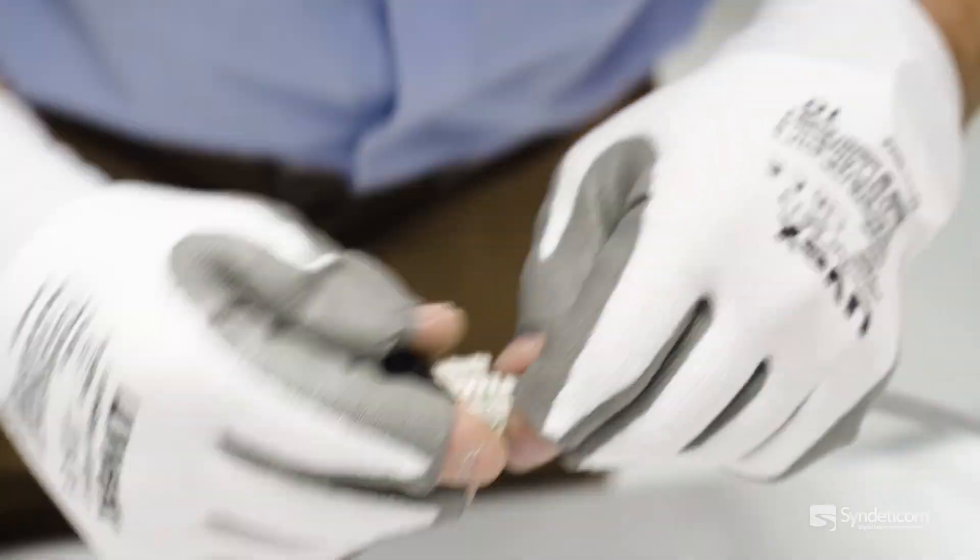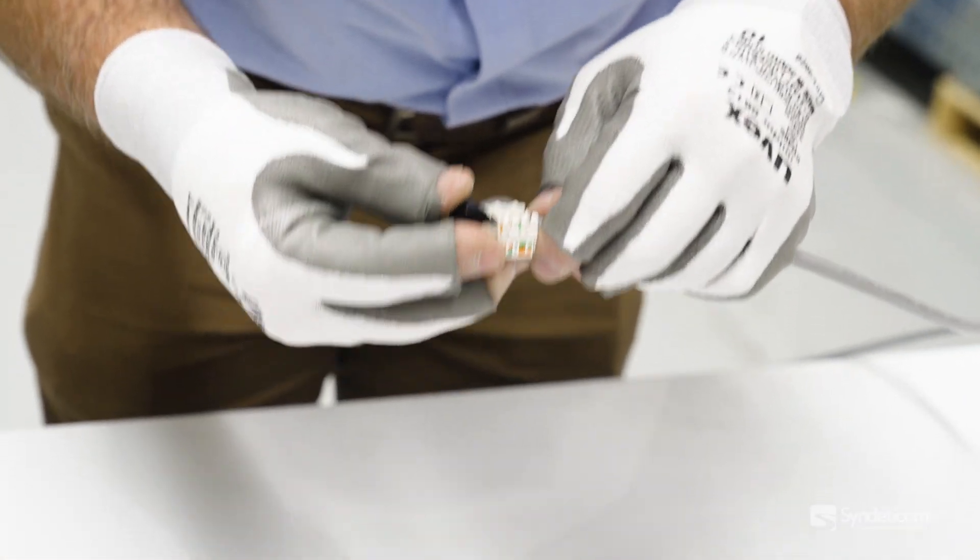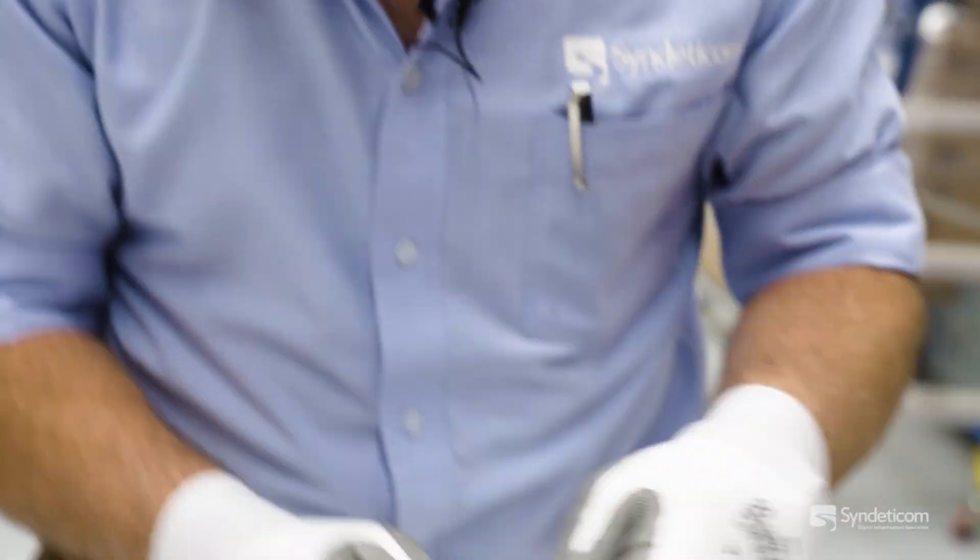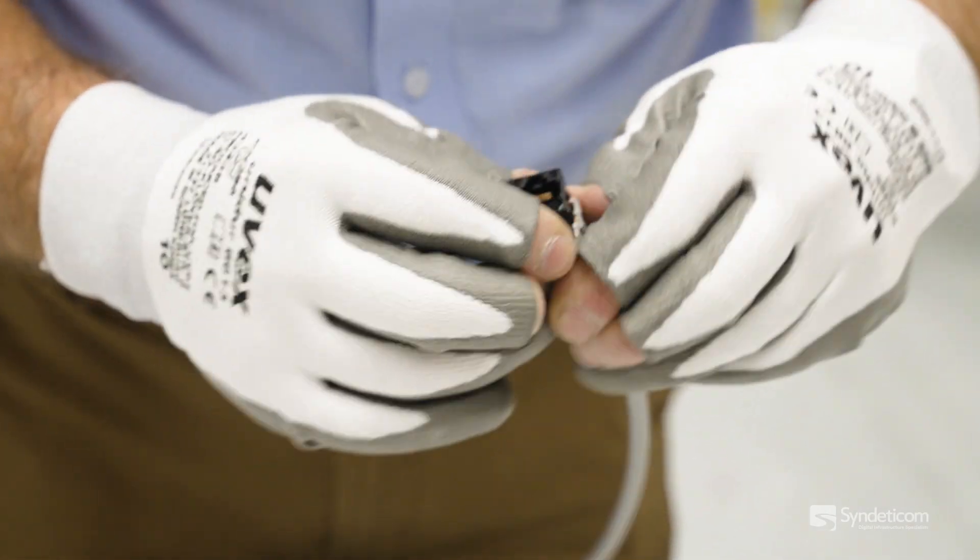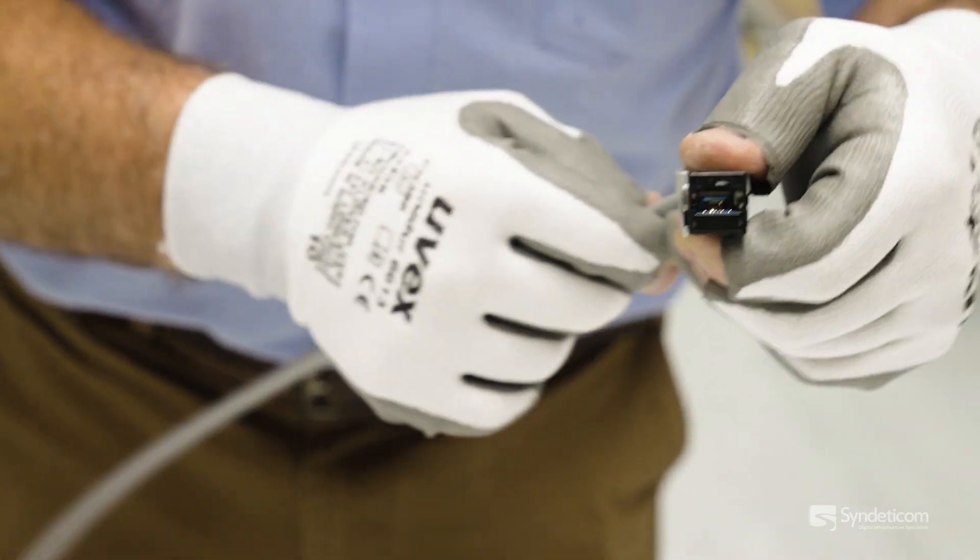Once you've done that, just inspect it to make sure that they're all in the right order and that the jacket's up nice and close at the back. Then the cap can just sit straight over there at the end of it, and that's it.